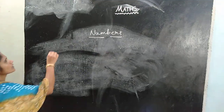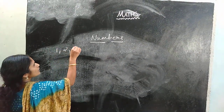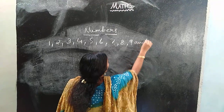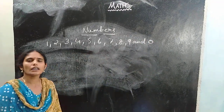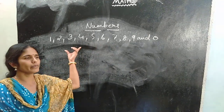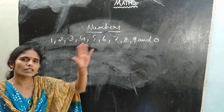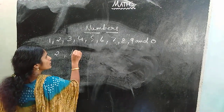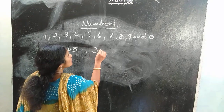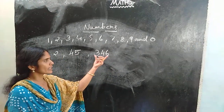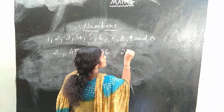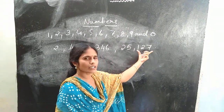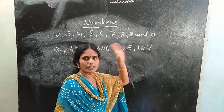Here we normally use the digits 1, 2, 3, 4, 7, 8, 9 and 0 to make numbers. By using these digits we can make smaller to bigger numbers. For example, 2 is a 1-digit number, 45 is a 2-digit number, 346 has 3 digits so it is a 3-digit number. Then 25,127 — how many digits are here? 5 digits, so it is a 5-digit number.